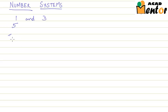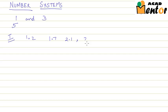The simplest way is you can say 1.2, 1.7, 2.1, 2.3, and 2.6. All these are rational numbers and they lie between 1 and 3. There can be infinitely many numbers which lie between 1 and 3.